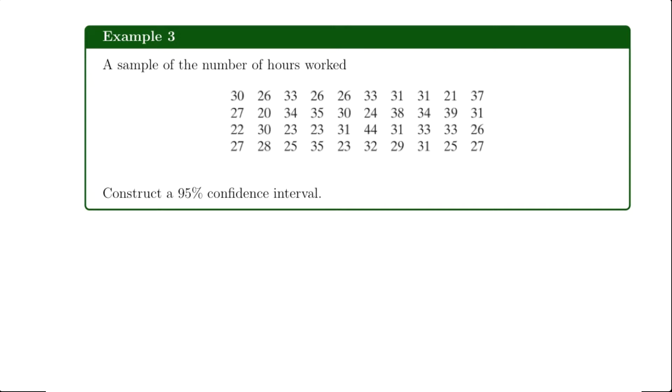So in this example I have a sample of 40 employees and I marked down how many hours they worked in that week. So for example this person worked 30 hours, this person worked 26, 33, 26 and so on. And I want to construct a 95% confidence interval.